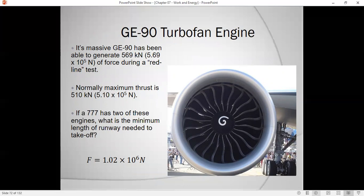Now let's consider the amount of thrust that this can generate. Redline tests could get it up to about 569,000 newtons of thrust, but normally you're not going to take it over 510 kilonewtons of thrust. So we have two of these engines on the plane. Let's say that they're both revved up to full throttle, just about roughly about one meganewton. Roughly one million newtons.